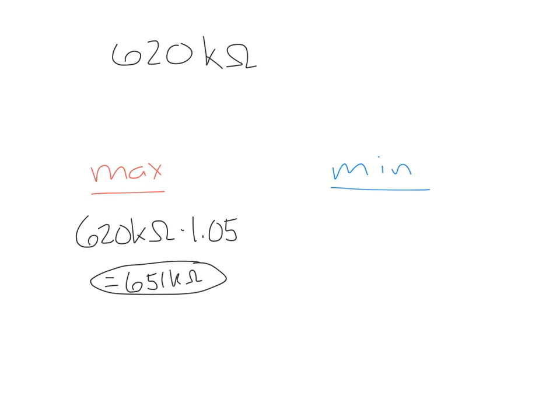And likewise, if I want to find the minimum value, that's 620 kiloohms. And 5% below is 0.95. That's 95% of the value. So that would be equivalent to 589 kiloohms.